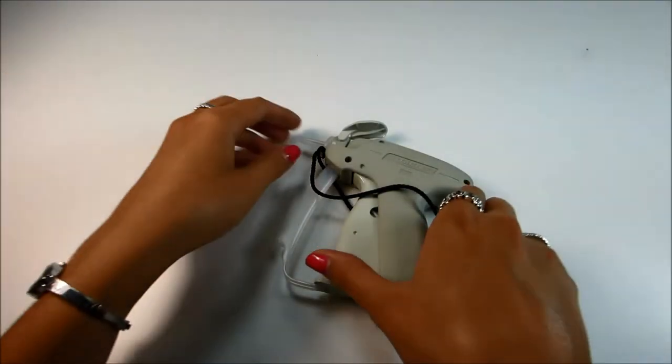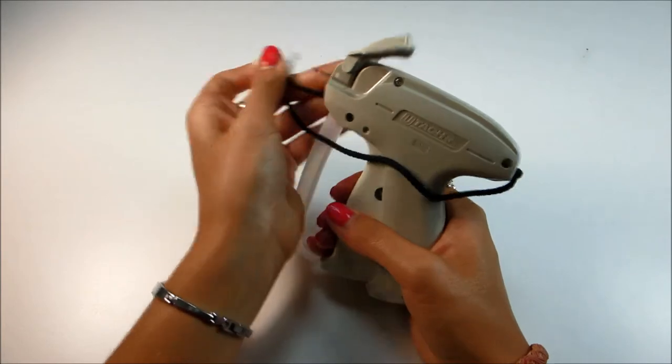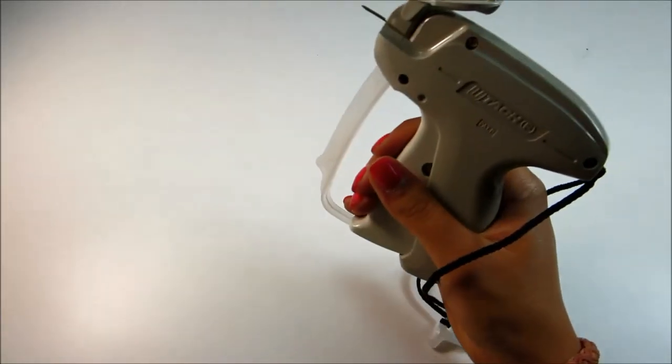This is another U-Touch tagging gun. Again it has the pin bar and pin guard but this particular model uses a fine needle which makes it the perfect tag gun to use for more delicate fabrics and garments.